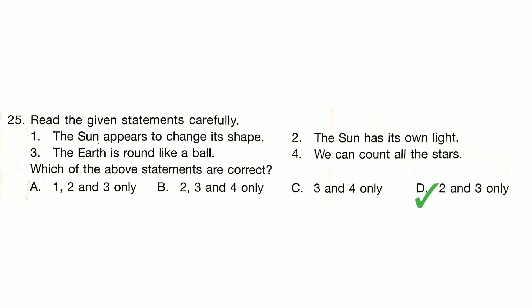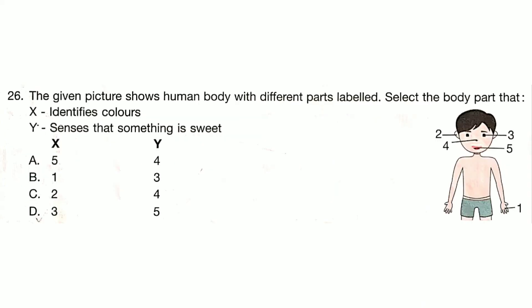The given picture shows the human body with different parts labelled. Select the body part that identifies colours and senses that something is sweet. Answer is Option D.